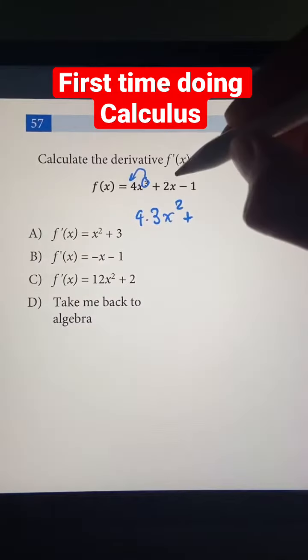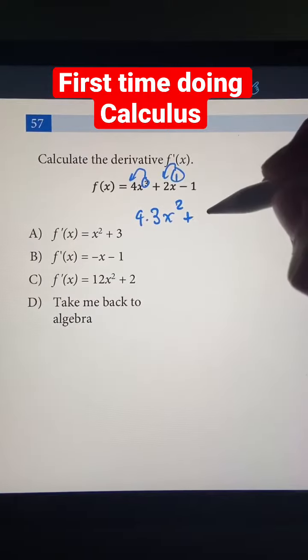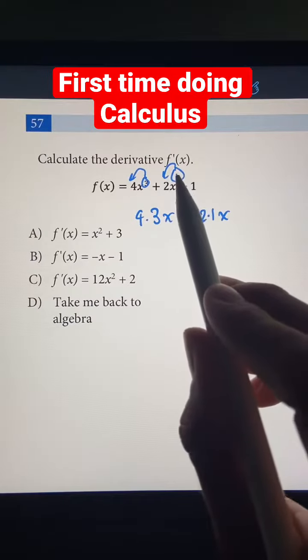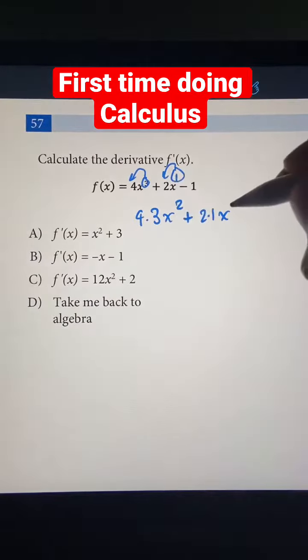Now for this next term, we technically have an exponent of 1 right here. So we take that exponent, bring it down, and we get 2 times 1 times x, and we decrement this exponent by 1. So we get 1 minus 1, which is just 0.